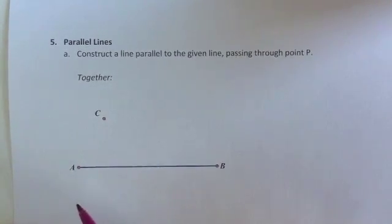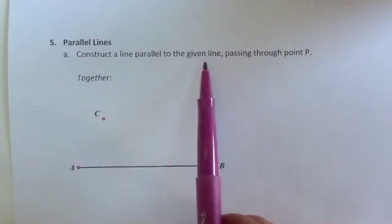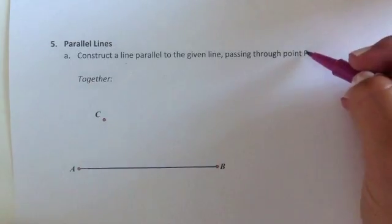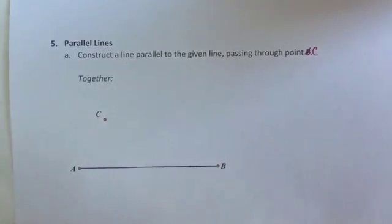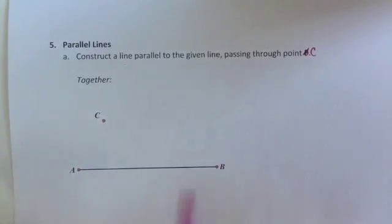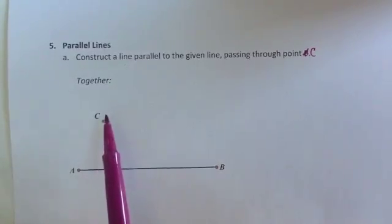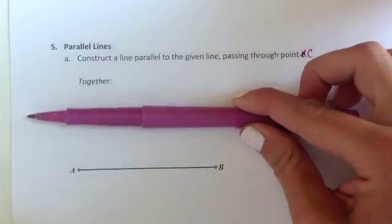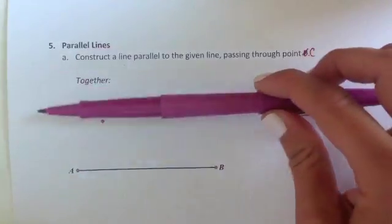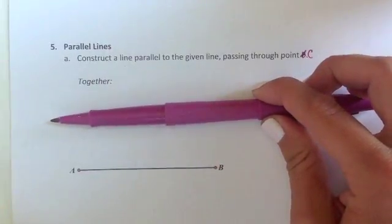Construction 5 asks us to create a line that's parallel to the given line passing through point C. Here we're given line segment AB and point C. Our goal is to construct a line that's parallel to AB that passes through C. So in the end we want a line that goes like this.